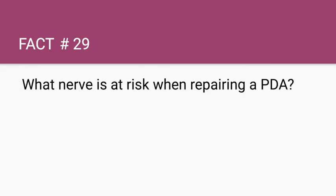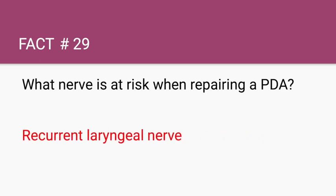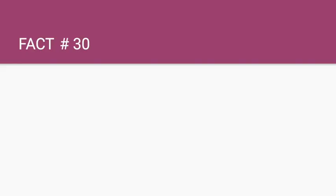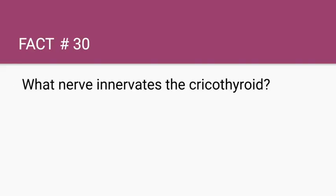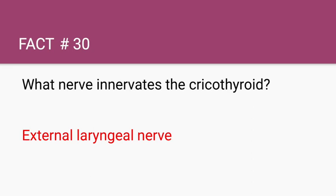What nerve is at risk when repairing a PDA (patent ductus arteriosus)? The recurrent laryngeal nerve. What nerve innervates the cricothyroid muscle? The external laryngeal nerve. This is very high yield: all laryngeal muscles are supplied by the recurrent laryngeal nerve, except the cricothyroid, which is supplied by the external laryngeal nerve.